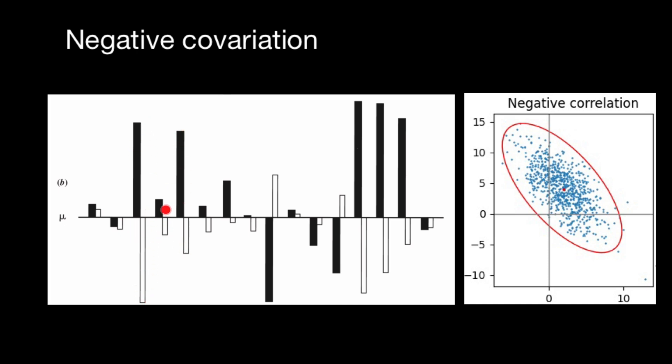Again, there are exceptions to this rule, the individuals on the far left and far right, for example. But because positive deviations in one attribute show strong tendency to be paired with negative deviations in the other attribute...